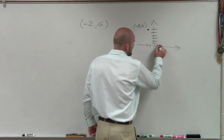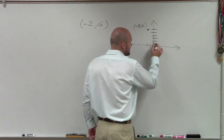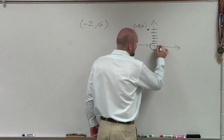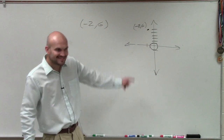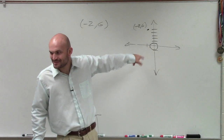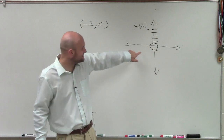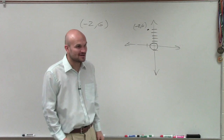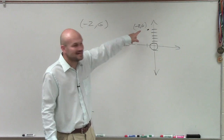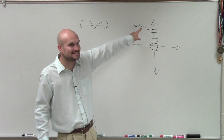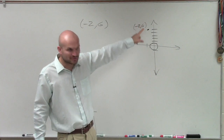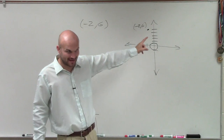So the unit circle has a radius of 1. That means it looks something like this — there is a little unit circle right down there. So is this point on the unit circle? No. So don't tell me cosine is equal to negative 2, and don't tell me sine is equal to 6.